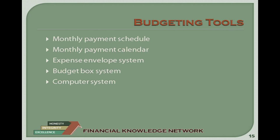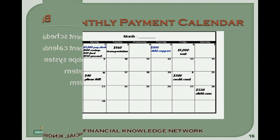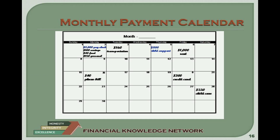Budget Box System. The Budget Box is a small box with dividers for each day of the month. When you receive a bill, check the due date and place it behind the divider that represents the bill's due date. As you receive income, pay all bills that are due.